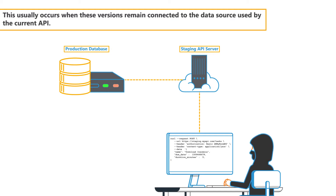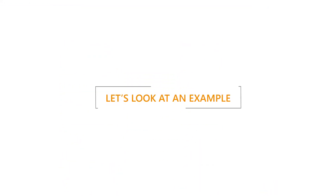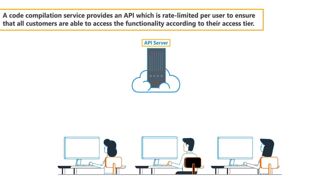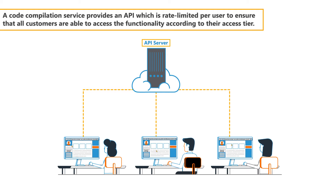To understand improper asset management vulnerabilities, let's look at an example. A code compilation service provides an API which is rate limited per user to ensure that all customers are able to access the functionality according to their access tier.